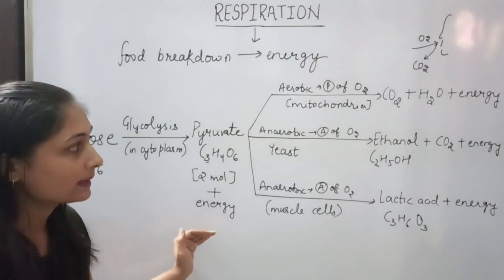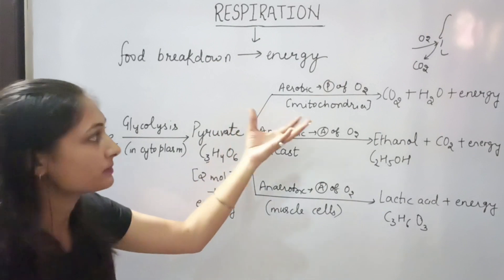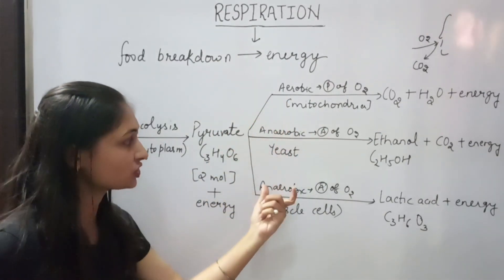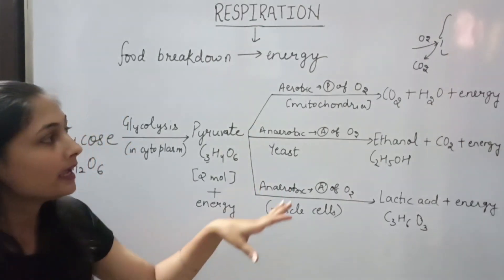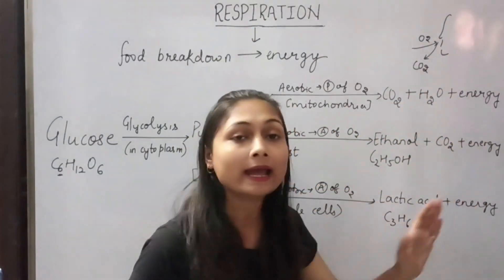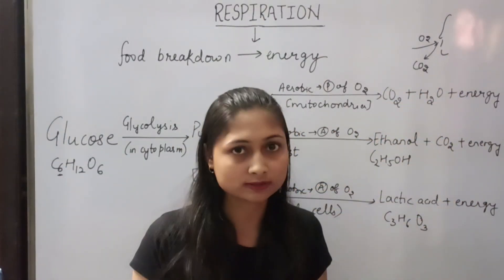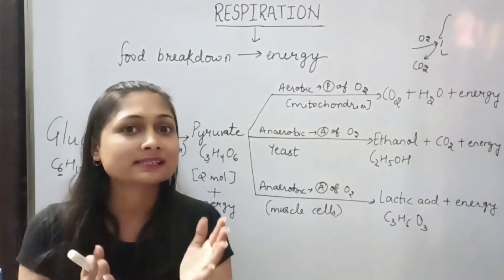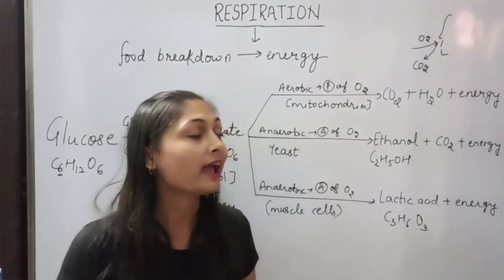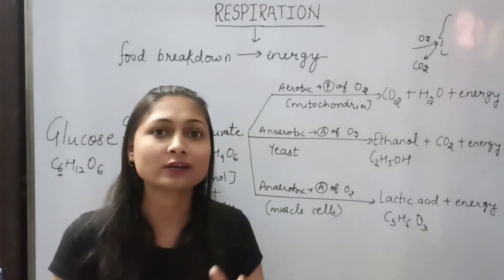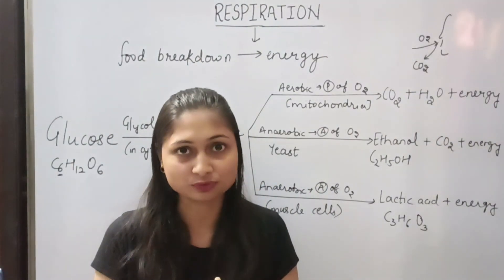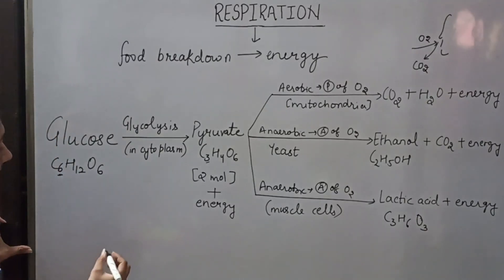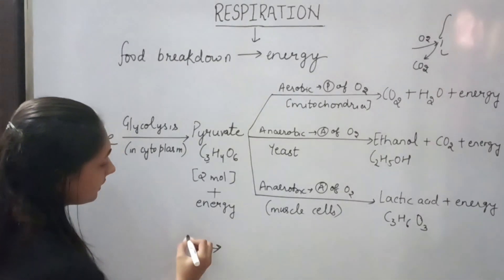So these three types of respiration we have studied: first, aerobic respiration in mitochondria; second and third, the two cases of anaerobic respiration. In all three processes, energy is produced at the end. But aerobic respiration produces more energy, and anaerobic respiration produces less energy. This energy is used for the production of ATP.